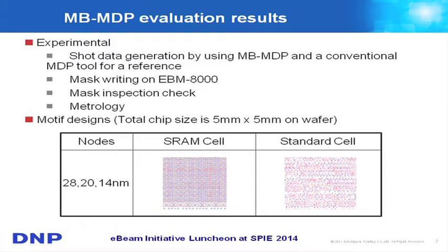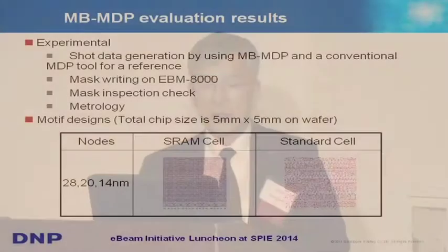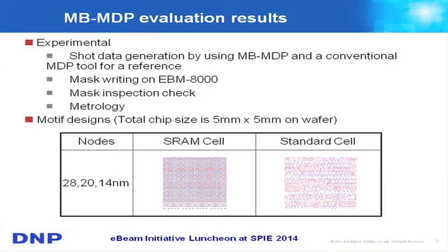The experiment was done by writing a mask on the most advanced writing system, and we are planning to inspect this mask and also perform a methodology evaluation. For the motif designs, we picked up SRAM cells and standard cells at the 28, 20, and 14-nanometer node models.